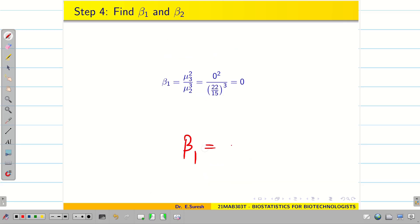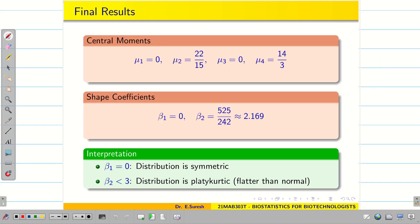Next we have to find beta 1. Beta 1 is mu3 square divided by mu2 cube. Mu3 is 0. So beta 1 is 0. Next beta 2. Mu4 divided by mu2 square. Write mu4 value. And then mu2 square. 22 by 15 whole square. Use your calculator. Find the value. And then write the answer. The conclusion is beta 1 equal to 0. The distribution is symmetric. Beta 2 is less than 3. So it is going to be flatter, platykurtic. Hope you understand students.